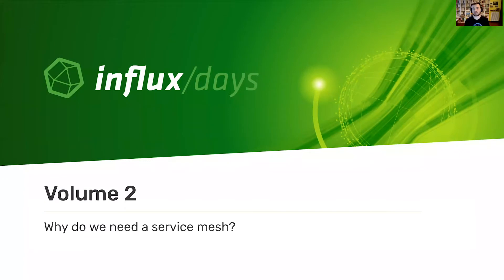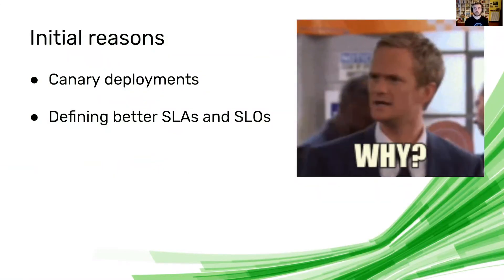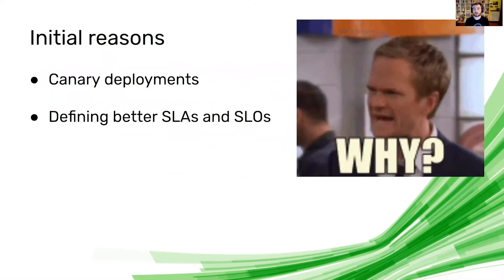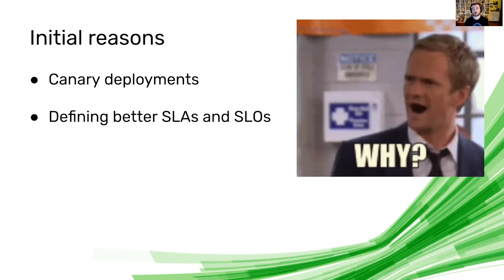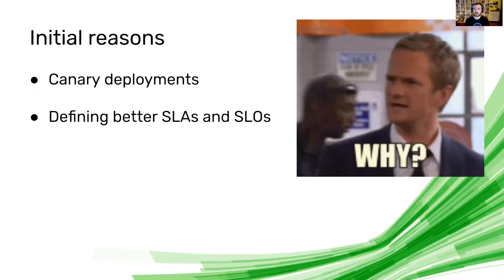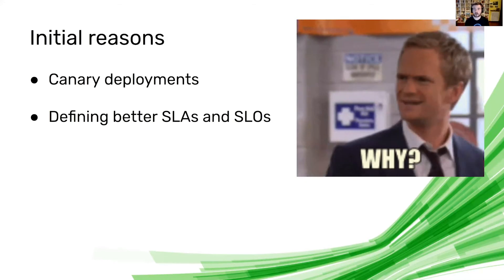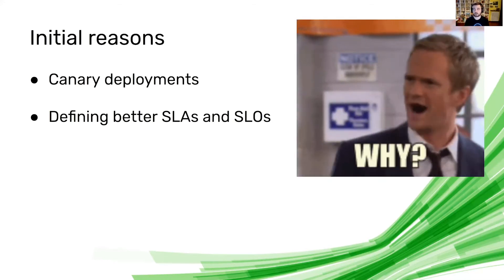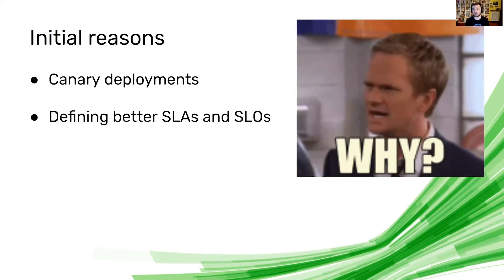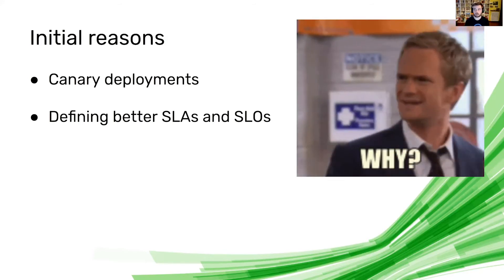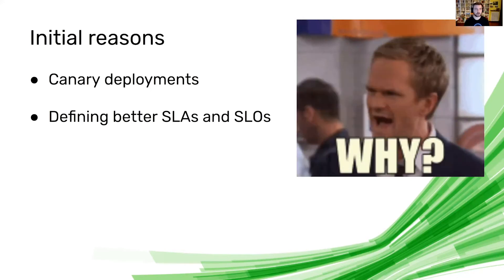Why do we need the service mesh specifically at InfluxData? Our reasoning: we wanted to do canary deployments — directing 10% of traffic to a specific new service. We're making big changes and defining better SLAs and SLOs in our team. We need to define when an application is performing well. A spike of 500s coming from your application doesn't necessarily mean the application itself is bad — there are so many parts of the stack that can go wrong. These were the driving factors, and we're really enjoying working with Istio.